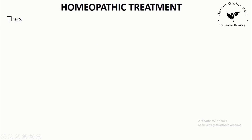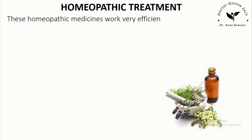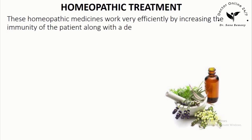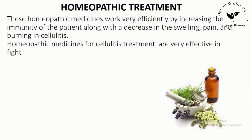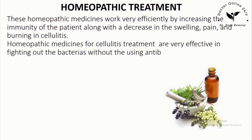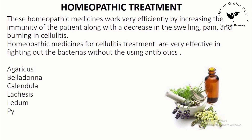These homeopathic medicines work very efficiently by increasing the immunity of the patient along with a decrease in swelling, pain, and burning in cellulitis. Homeopathic medicines for cellulitis treatment are said to be effective in fighting bacteria without using antibiotics. Examples include: Agaricus, Belladonna, Calendula, Lachesis, Ledum, Pyrogenium, Rhus tox, Silicea, and Sulphur.